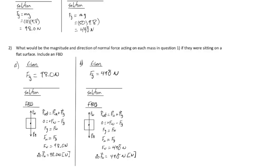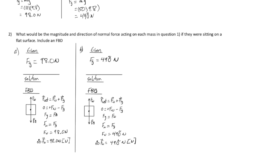Question two. What would be the magnitude and direction of the normal force acting on each mass in question one, if they were sitting on a flat surface? Include a free body diagram. So in these cases, if the object is sitting on a surface, the net force has to be zero. And the reason being is that the object is not sinking into the table or floating away. So if the object is in what's called a static equilibrium, where it's not moving, the forces have to balance out.